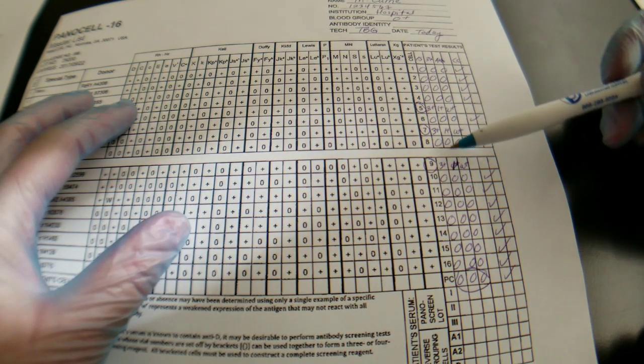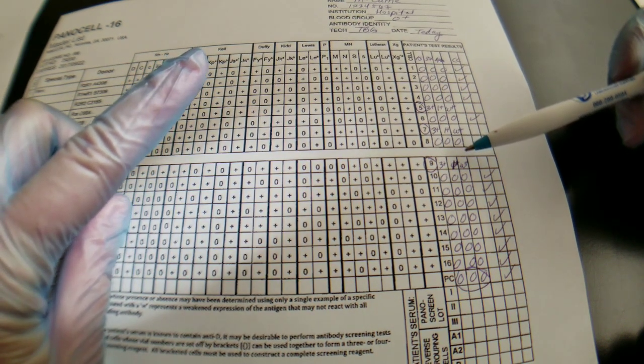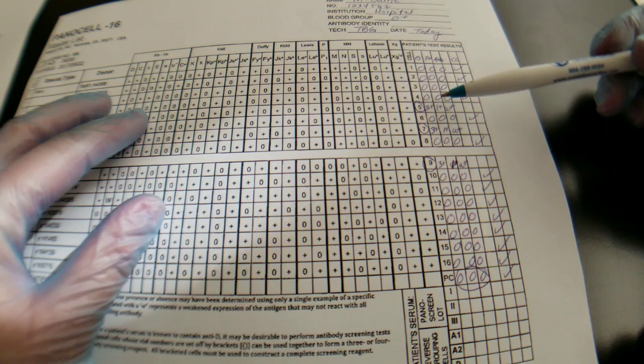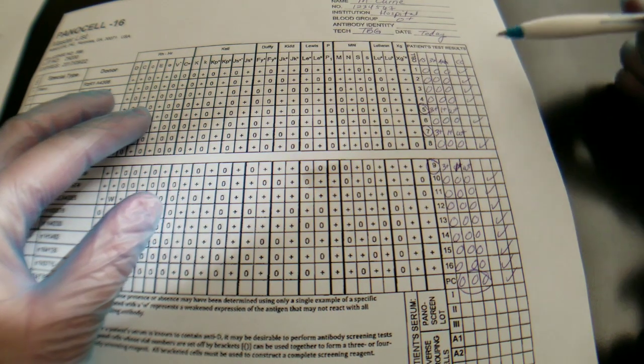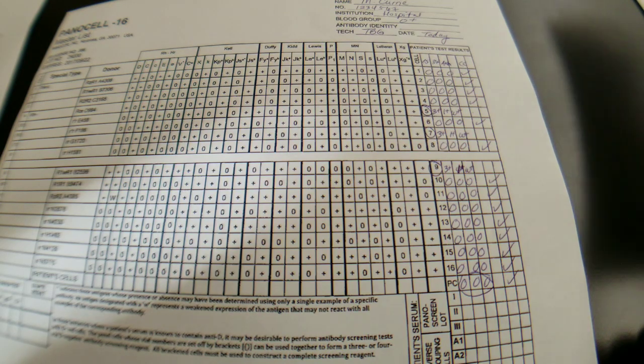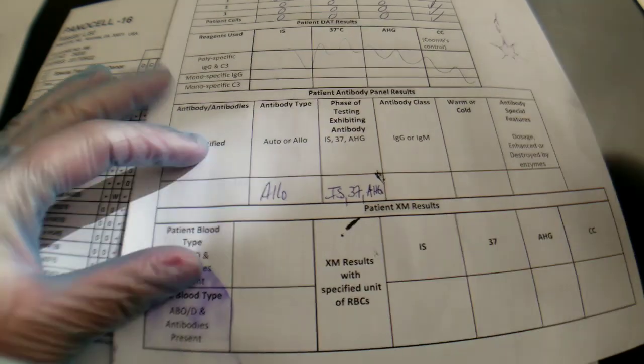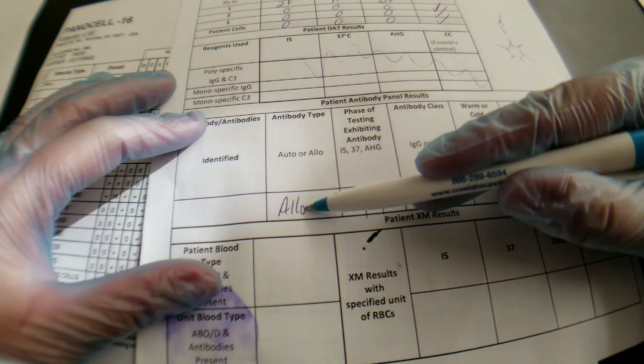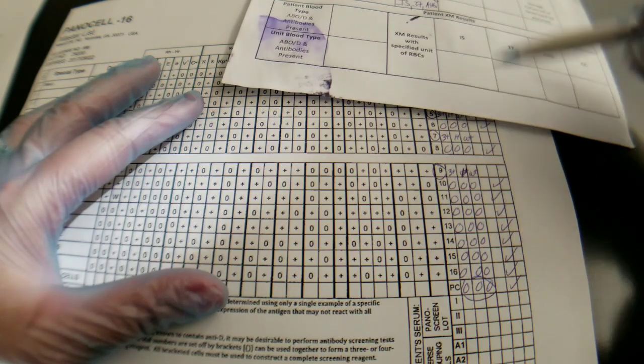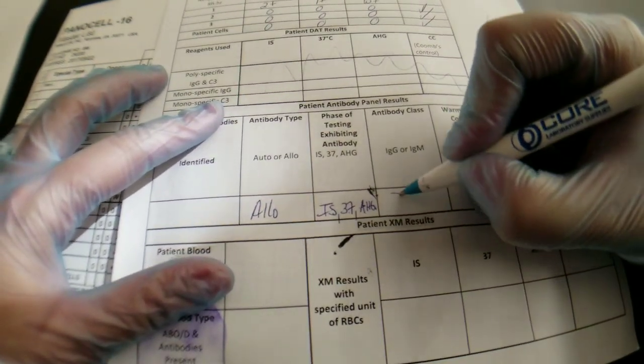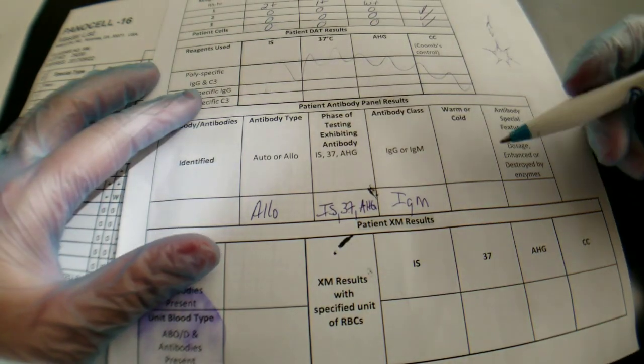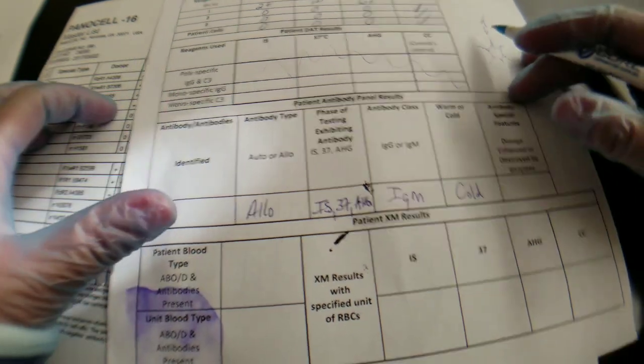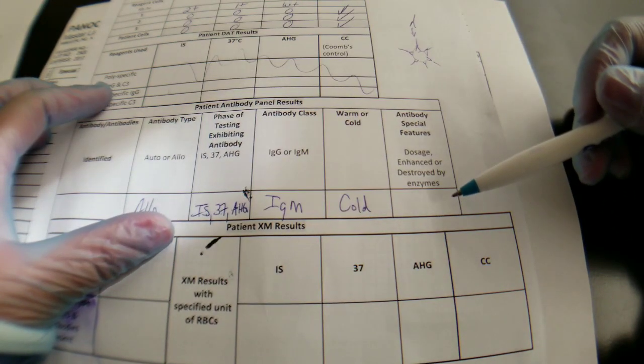Since they all seem to match, we're assuming that there is one antibody here. And since it reacted most profoundly in the immediate spin phase, I'm going to say that it's an IgM. So it looks like heating it up makes it go away. That is not very technical, but that is what you're looking at. It reacted at all three phases. We're assuming it's an allo antibody because of the negative auto control, and then it's going to be IgM because the higher reactivity is in the immediate spin. That would be considered a cold antibody just because it's reacting at room temperature.